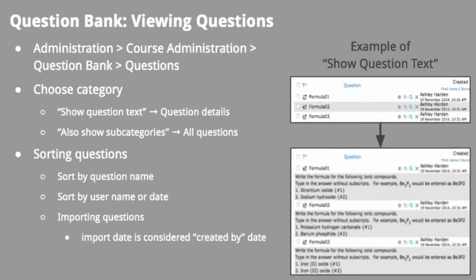When viewing questions in the question bank, course facilitators have icons to view more information, such as questions in specific categories or all subcategories in a parent category. Showing the question text is a way to see all the questions at once in the category, not just the names of the questions. This is a great way to view quiz question details when organizing question categories.